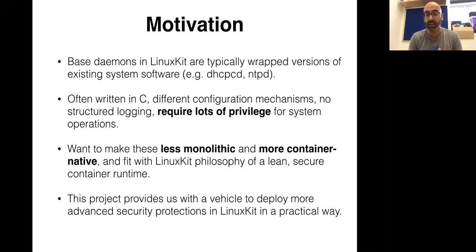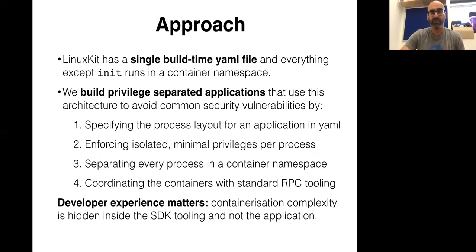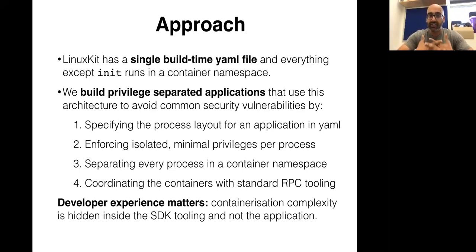Everything is now sitting inside containers and nicely isolated from each other, and we thought it's the right time to figure out how to kickstart a project to make these components less monolithic and more container-native. We want to make these the best way possible to write these services and to fit with the LinuxKit philosophy of building a very lean, secure container runtime. What I'm going to present is our thinking about how we can take advantage of almost every security protection available in Linux in a practical way, in order to rebuild services like DHCP and NTP — things we can really stand behind for the next 10 or 15 years.